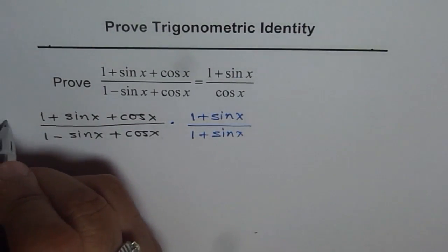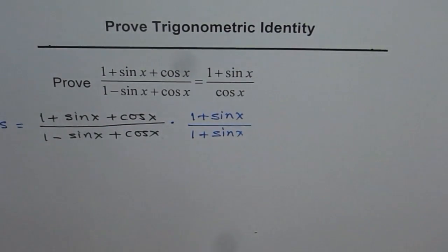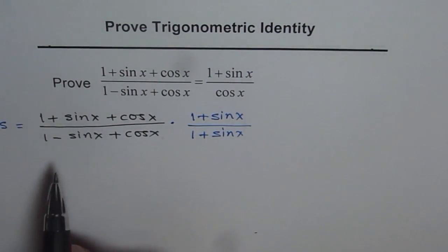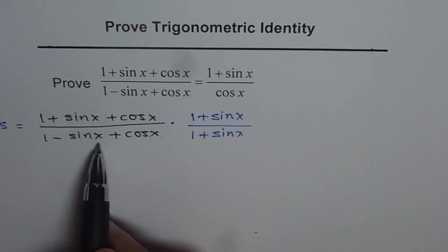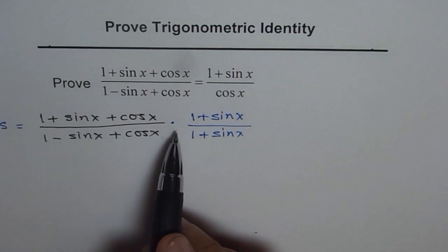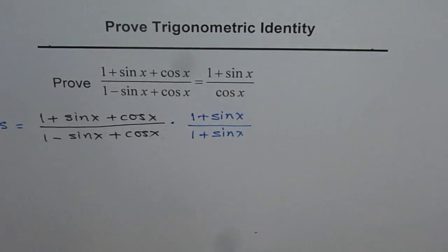Now our left side is equal to (1 + sin x + cos x) divided by (1 - sin x + cos x) times (1 + sin x) over (1 + sin x). That is the strategy.